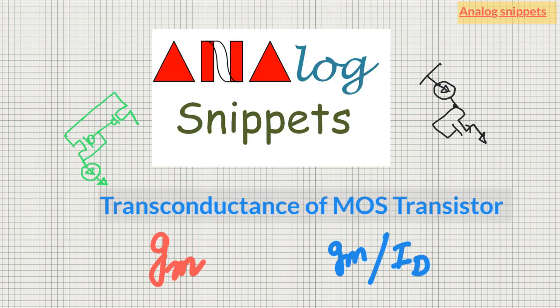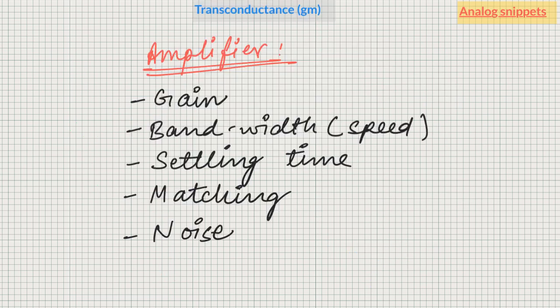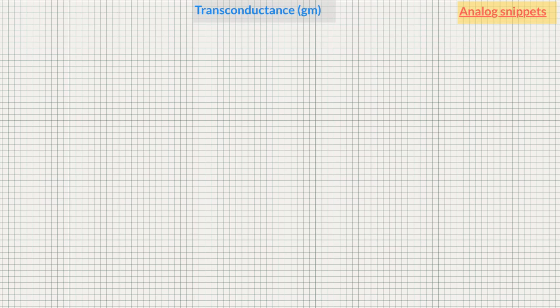Hello, in this video we'll talk about the transconductance or gm of a MOS transistor. gm is one of the most important design parameters in many analog designs. For example, in a typical amplifier design, gm defines gain, bandwidth or speed, settling behavior, matching, and noise. In fact, a lot of important parameters are defined by gm, so it's very useful to develop a good understanding of MOS gm.